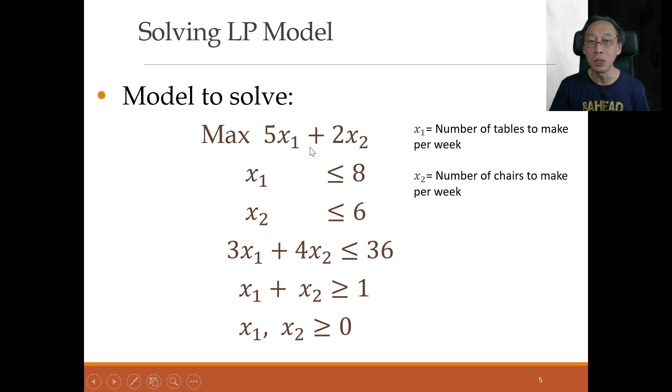So we're going to maximize the total profit. If making one table gets the boss $5, after minusing all expenses, imagining making it means able to sell it. So demand is not an issue. So if I make one table, I get $5. And if I make one chair, I get $2. Then I hope you are convinced that the objective function, the total profit will be 5x1 plus 2x2.